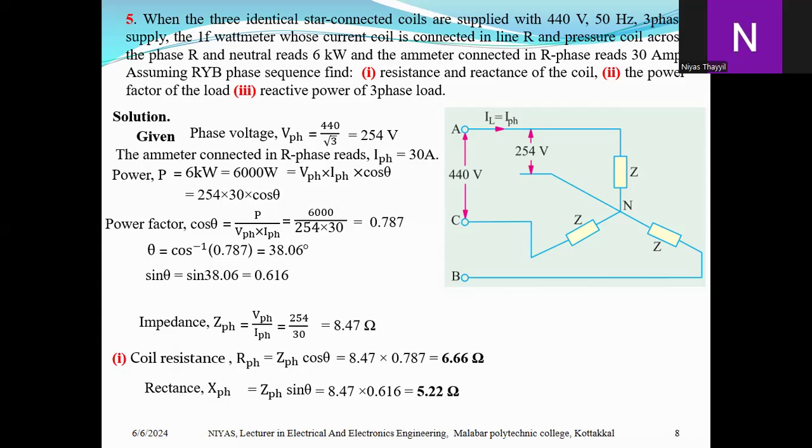Therefore sine theta equals 0.616. Coil resistance R_ph equals Z_ph times cosine theta equals 8.47 times 0.787 equals 6.66 ohms. Reactance X_ph equals Z_ph times sine theta equals 8.47 times 0.616 equals 5.22 ohms. Power factor of the load equals 0.787 lagging.